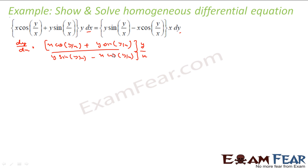So in this case also, I can rewrite this. If I divide everything by x — x by x, y by x, x by x, y by x — everything simplifies, and we see this is nothing but an equation in terms of y by x only.